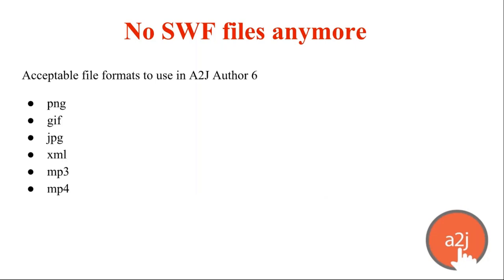You can no longer use Swift (.swf) files because they're Flash-based and Flash is no longer supported in A-to-J 6. But you can now use PNG, GIF, JPEG, XML, MP3, and MP4. LHI also has a much larger upload limit than before — previously around 25 megabytes — so you can now include audio clips, video clips, and images that you couldn't fit before. This gives much more freedom to include graphical tools within A-to-J.